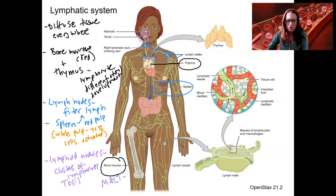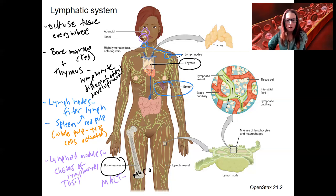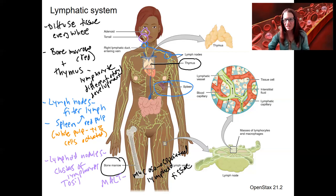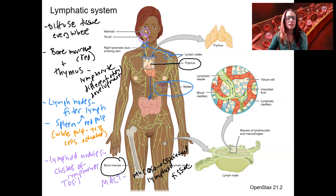We will see MALT when we look at the digestive system. This stands for mucosa-associated lymphoid tissue. These are examples of diffuse tissue that's everywhere — slightly larger collections. MALT is associated specifically with mucous membranes, just like the name says. So we will see Peyer's patches in the intestine. The appendix is related to this tissue as well — so specifically protection for mucous membranes.